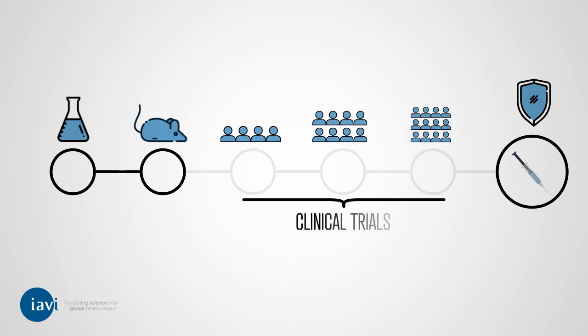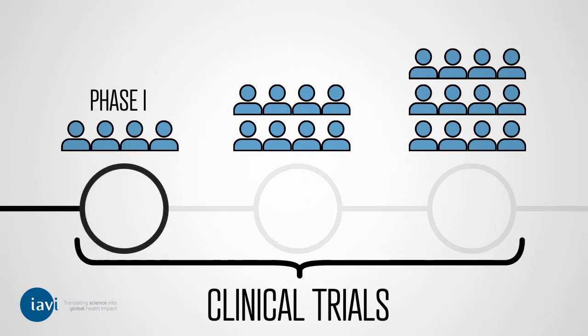Next, clinical trials are performed on humans. Phase 1 trials test the vaccine in fewer than 100 uninfected volunteers for up to one year. It determines whether the vaccine is safe and how the body's immune system responds to it.